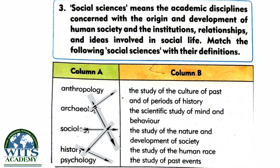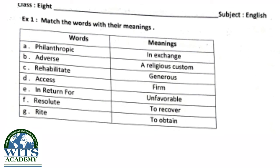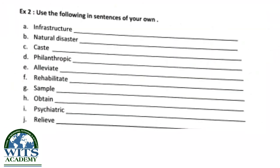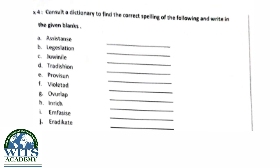That was all about today's lecture. Now here is your assignment. In question number one, I have given you the words and shuffled meanings — you will have to match the words with their meanings. In question number two, you will have to use the given words in your own sentences. In question number three, I have given you some wrong spellings — you will have to consult a dictionary to find the correct spellings. These three questions are your assignment. Thank you.